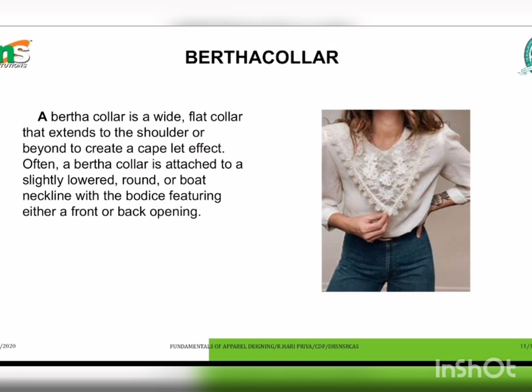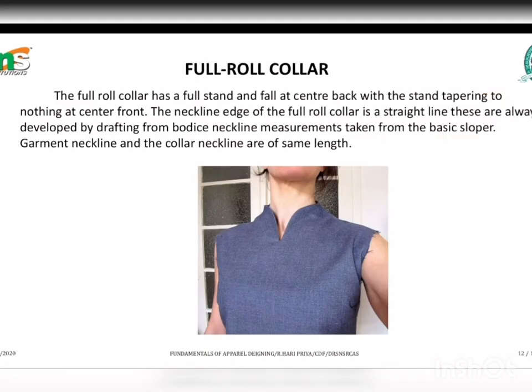Next, the full roll collar. The full roll collar has a full stand and a fall at the center back, with the stand tapering to nothing at the center front. The neckline edge of the full roll collar is a straight line. These are always developed by drafting from the body's neckline measurements taken from the basic sloper. The garment neckline and the collar neckline are of the same length.